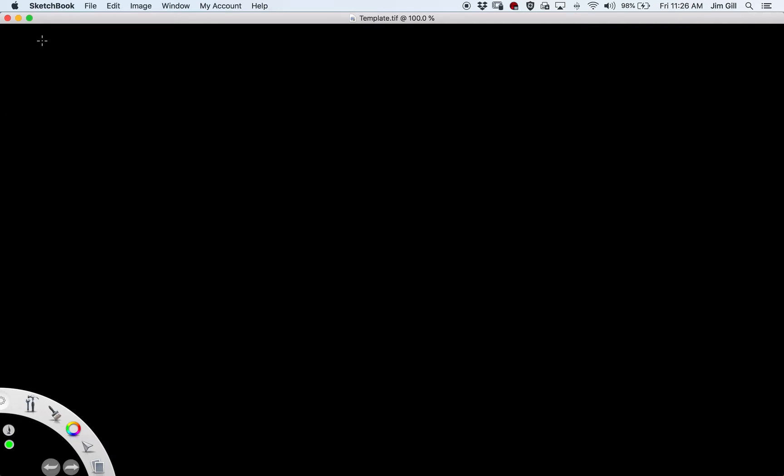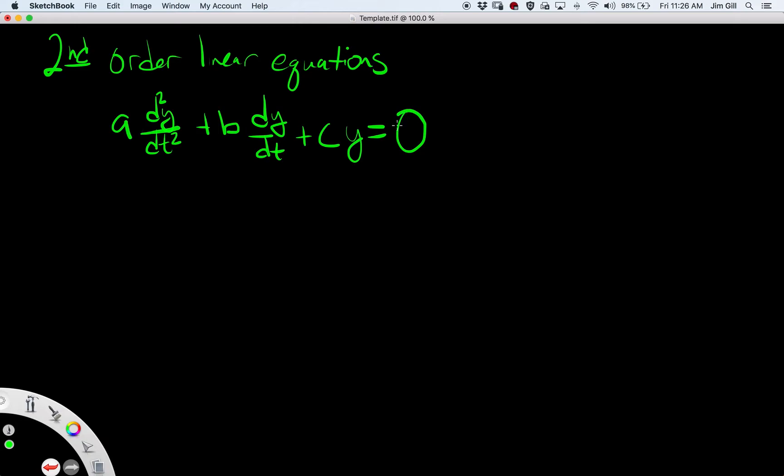Now we're going to talk specifically about second order linear equations, and in particular we're going to have constant coefficients. So these are equations that look like this: some constant times the second derivative of y with respect to time, plus some other constant times the first derivative of y with respect to time, plus some constant times y itself is equal to zero.